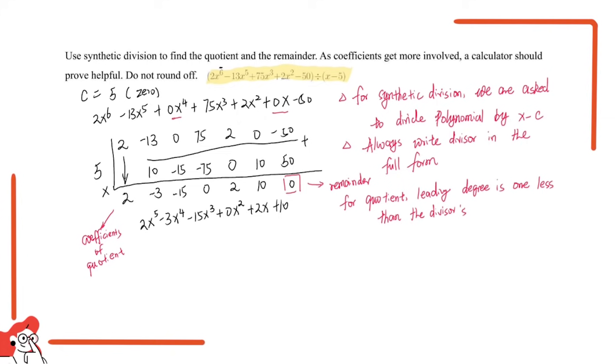And because our remainder is 0, this is the quotient right here. And our remainder equals 0. So these two are the answers for this question.